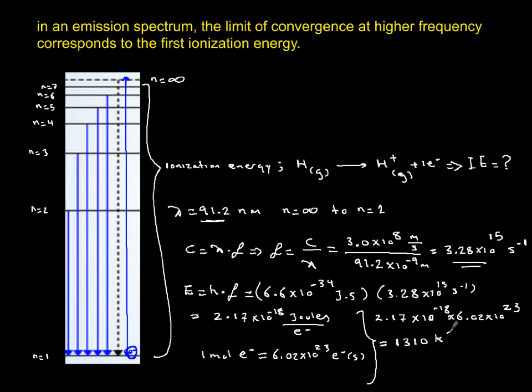That will give me 1310 kilojoules per mole, and that's the ionization energy of hydrogen. So if you know the energy required to go from n equals one to n equals infinity, that's your ionization energy. In order to calculate that, all you need to know is the wavelength that an electron emits when it comes from n equals infinity to n equals one. You go through these calculations, and you should be able to reproduce it. That's your first ionization energy for hydrogen.